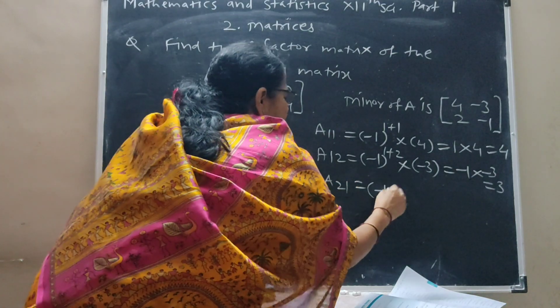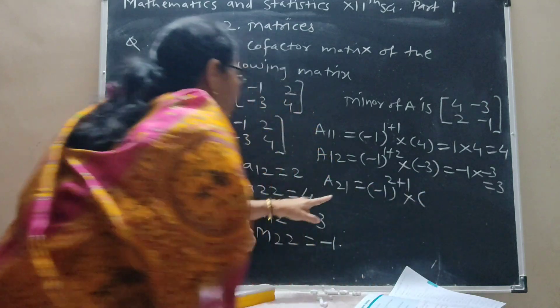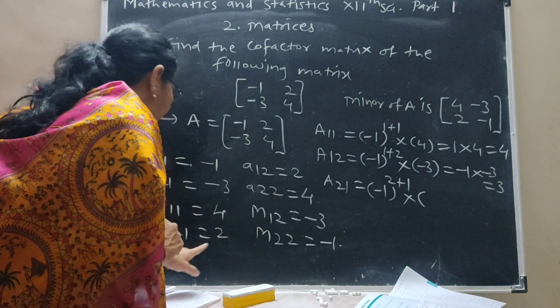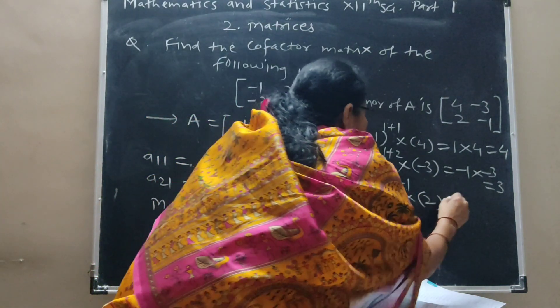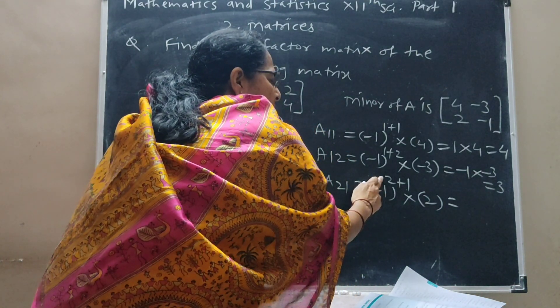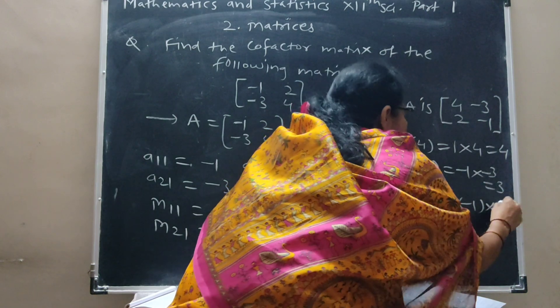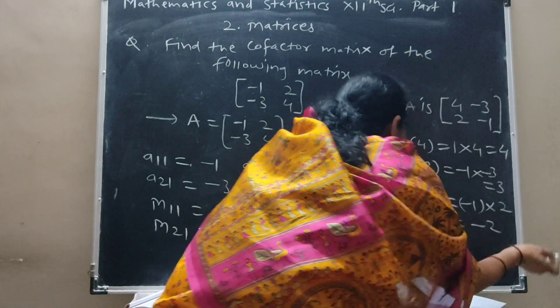A21 equals minus 1 raised to 2 plus 1 times the respective minor 2. Minus 1 with odd power gives minus 1 times 2, finally this is minus 2.